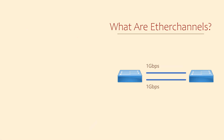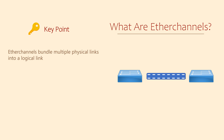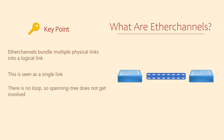EtherChannel is a technology that takes two or more physical links and bundles them into a single logical link. So back in that case where we had two links between a switch, we could configure them as an EtherChannel and they would act like a single link with up to two gig of bandwidth. And because it appears as a single link, spanning tree wouldn't block anything.